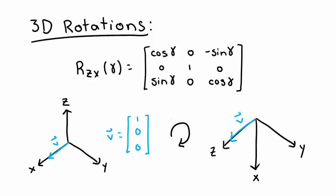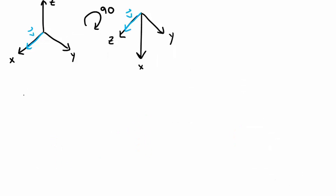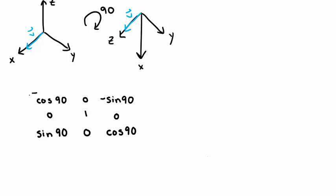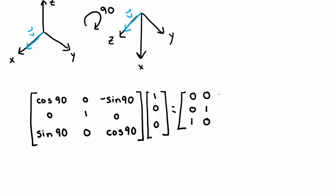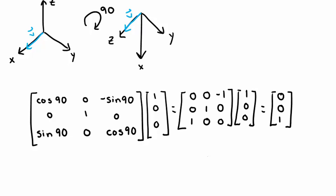I know that my resultant coordinate system, just by drawing a picture without doing any math yet, should look like this. Assuming that the vector doesn't move, we should get a resulting vector that points in the positive z direction. Now let's apply matrix multiplication between the rotation matrix and the vector and see if the results are consistent. It looks like the math checks out, and the rotations in the picture are consistent.